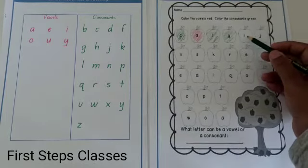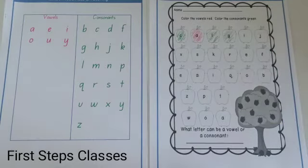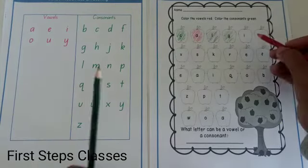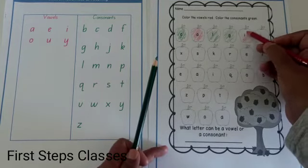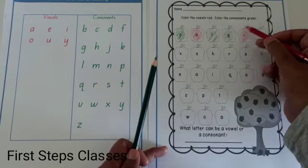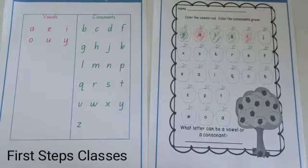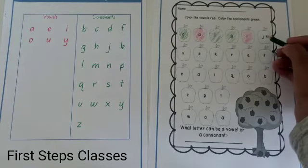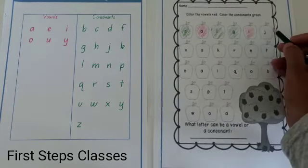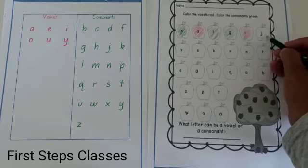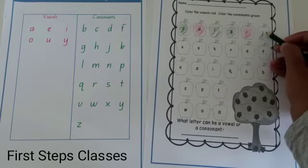Let us look at another letter which is A, which makes the sound A. It is a vowel, so we color it in red. The next letter is L — L is a consonant, so let us color it in green. The letter G makes a G sound — that's a consonant again, let us color it in green. The letter I is a short vowel which makes the sound E, so let us color it in red. J is a consonant and makes the sound J — let us color it in green.